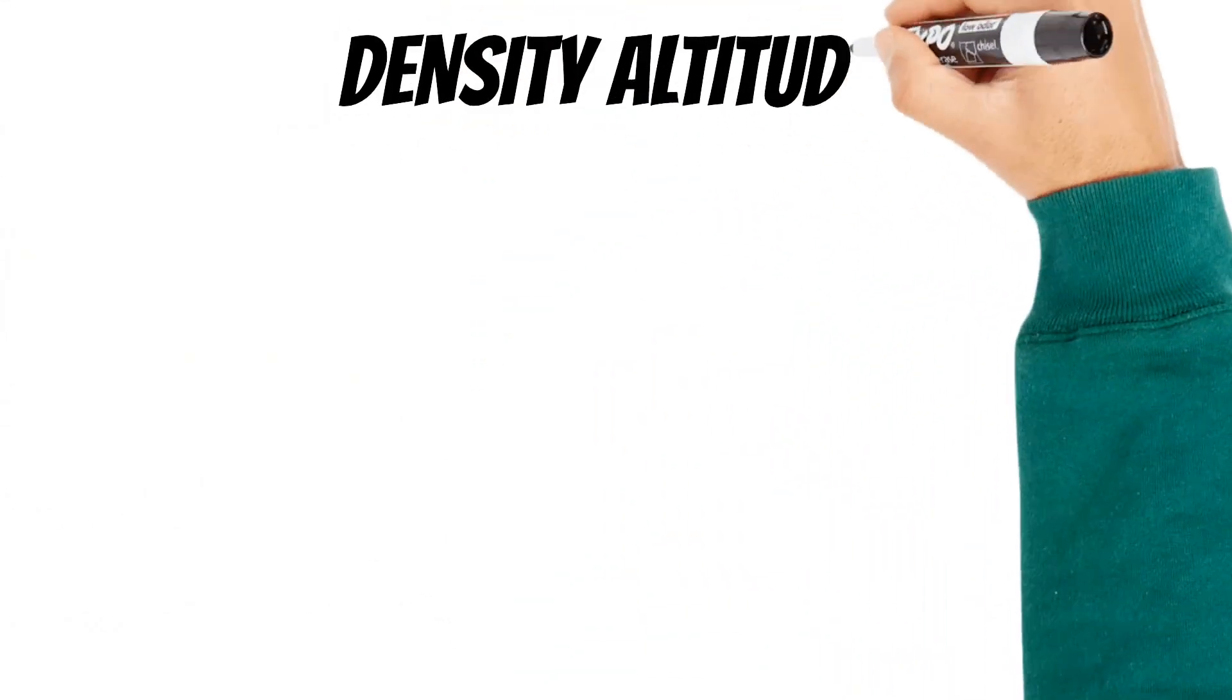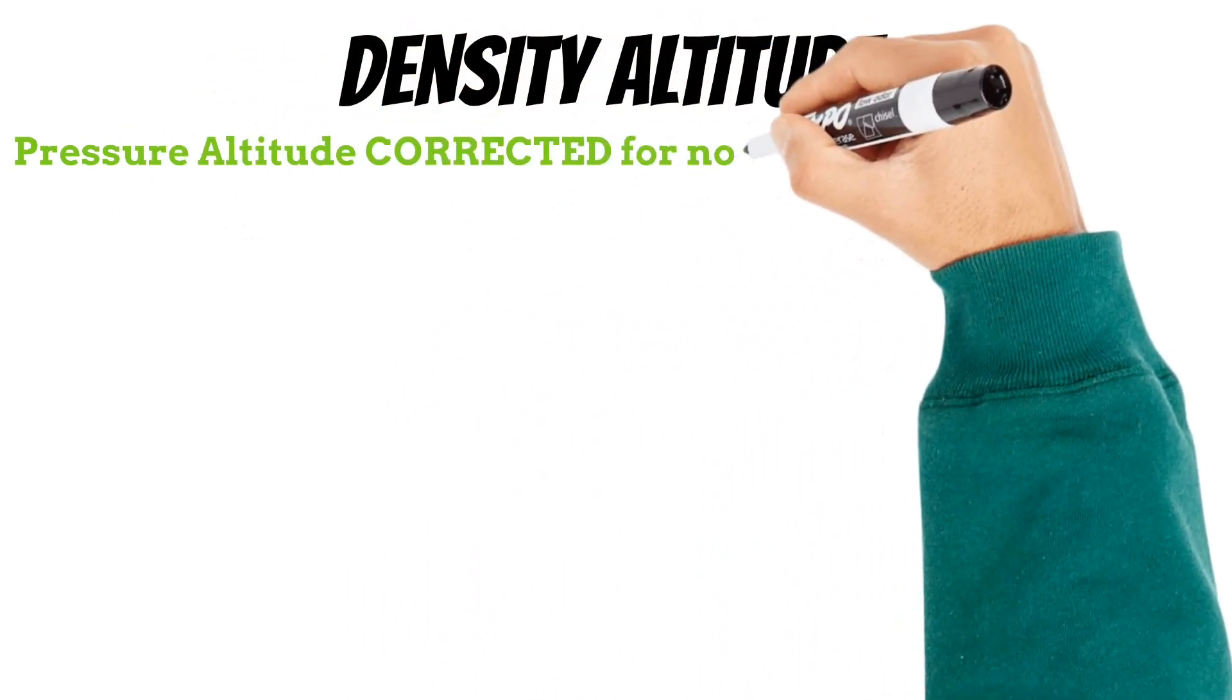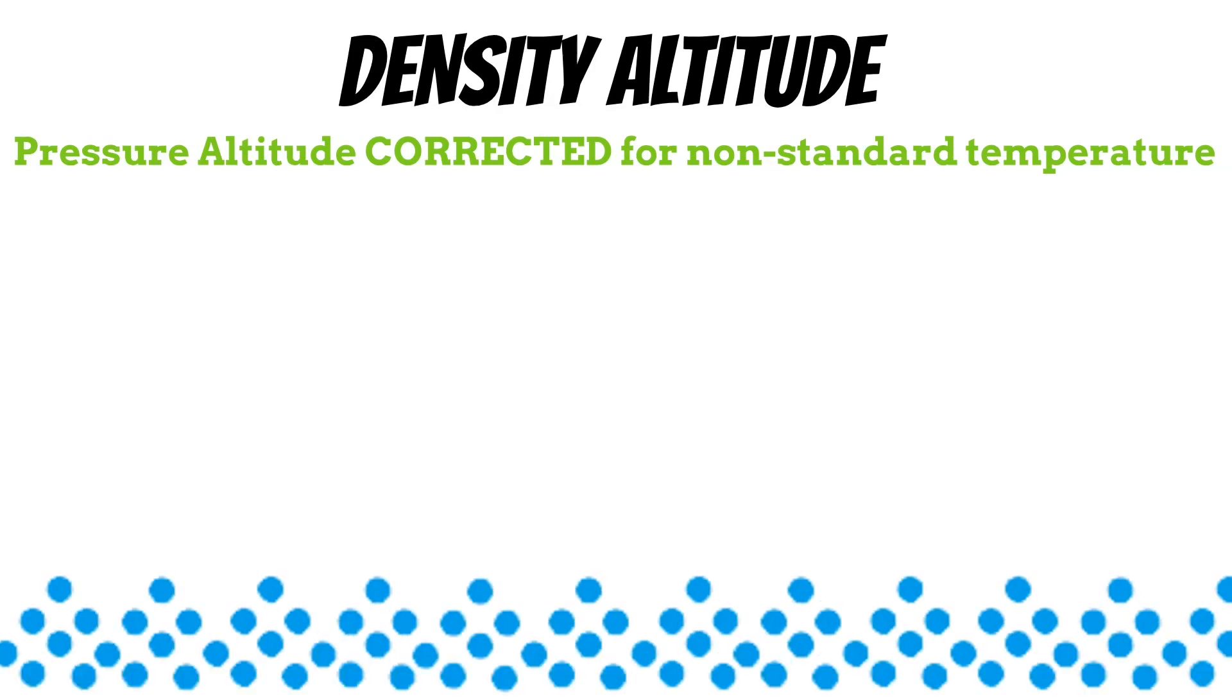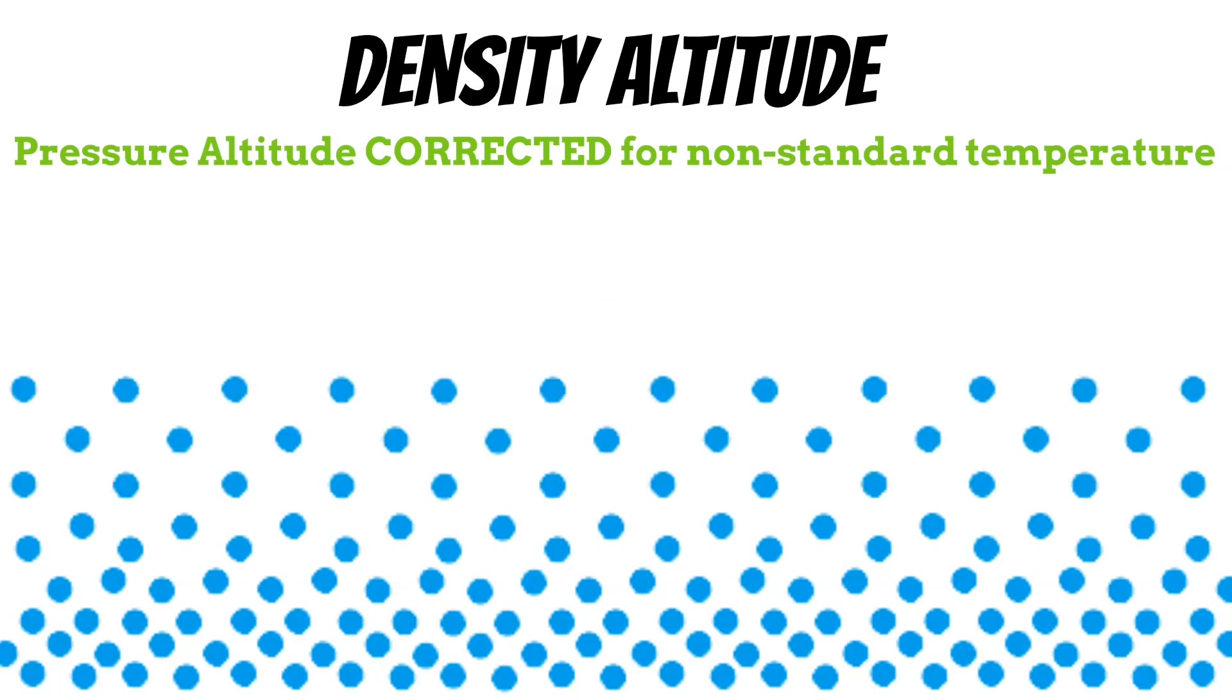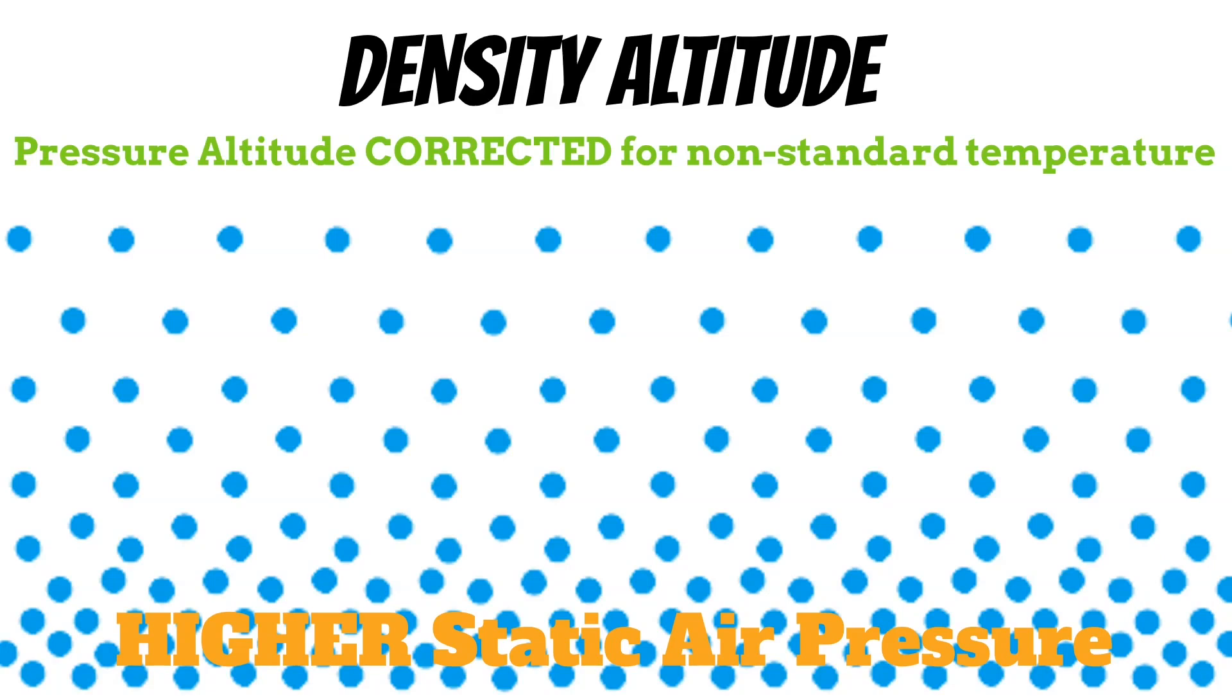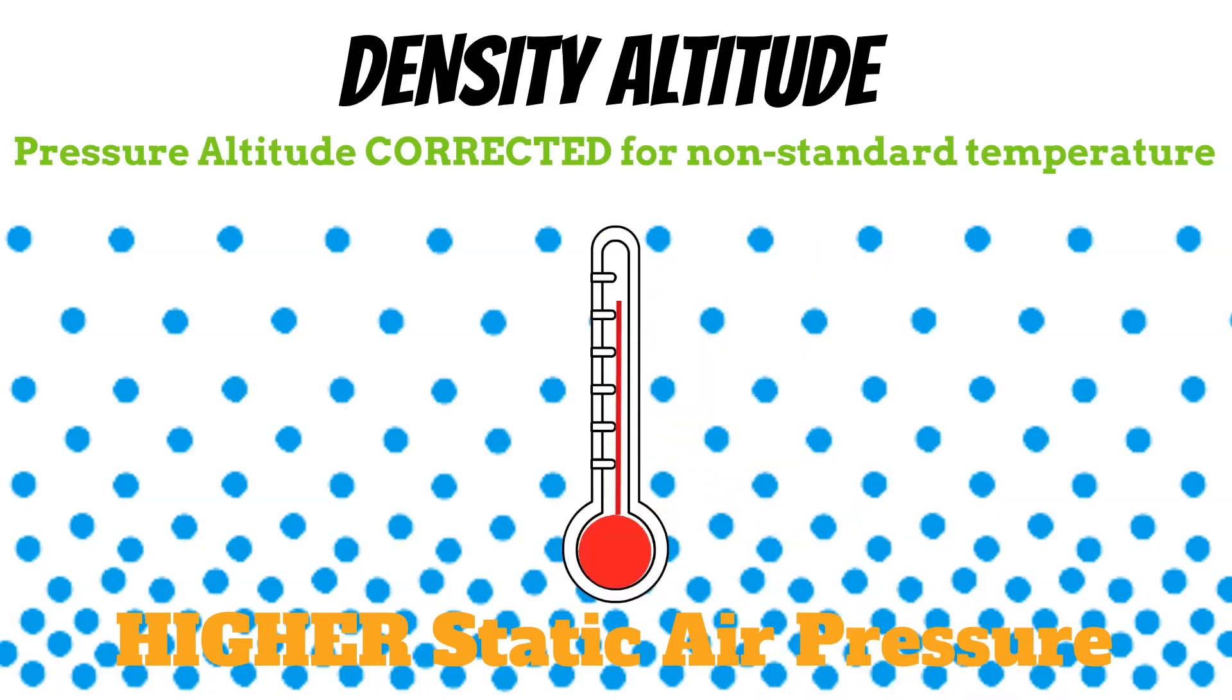The next type of altitude that you need to be familiar with is called density altitude. This is pressure altitude corrected for non-standard temperature. As you're probably already aware, at lower altitudes, the air molecules are more tightly packed together. This creates a higher static air pressure at low altitudes. But as the temperature rises, this pushes the air molecules apart, which lowers the air pressure from the ground all the way up to the top of the atmosphere.